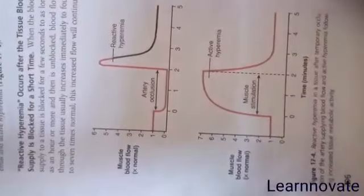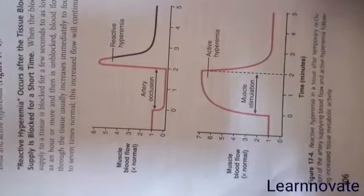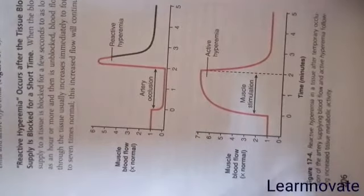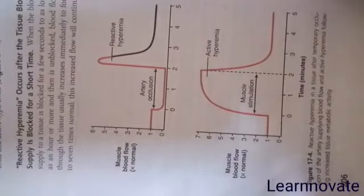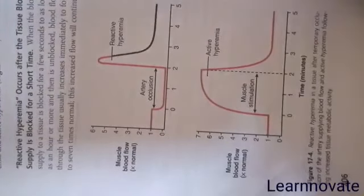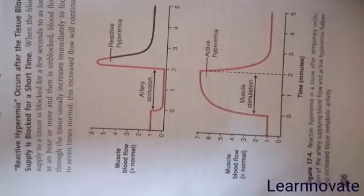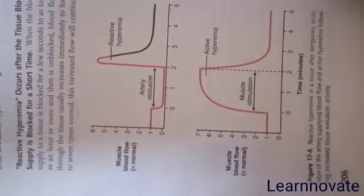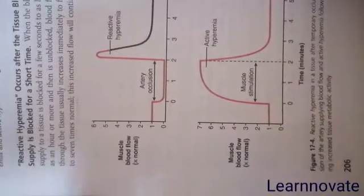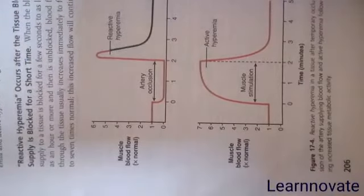Now coming to another mechanism — acute tissue blood flow control. Acute local blood flow control occurs through two pathways: it is either metabolic or myogenic. When metabolism of tissue increases, it will need more and more oxygen and nutrients. There are two conditions we call reactive hyperemia and active hyperemia, which are considered in this graph diagram.